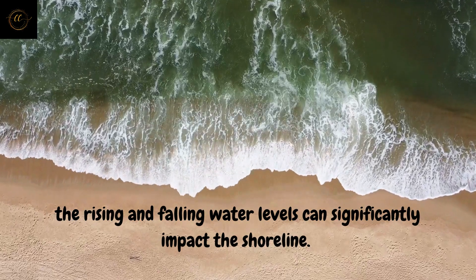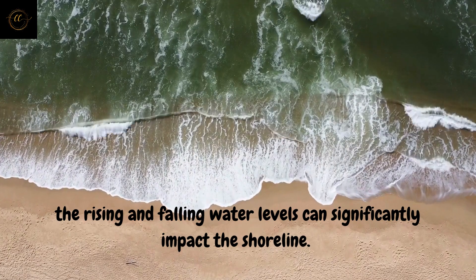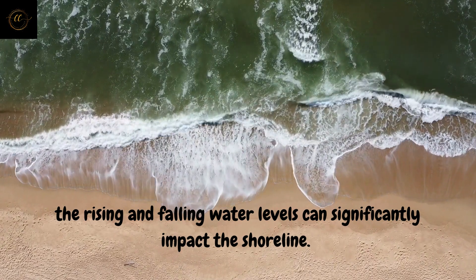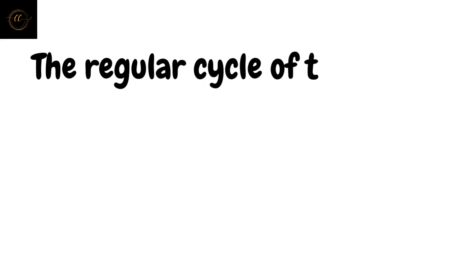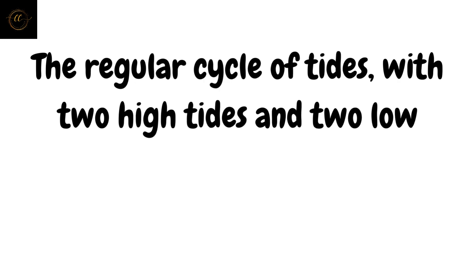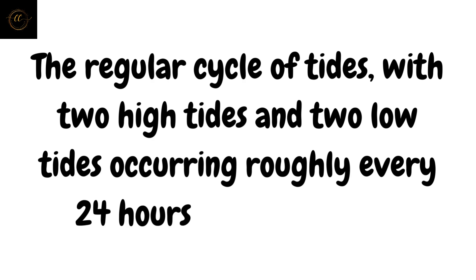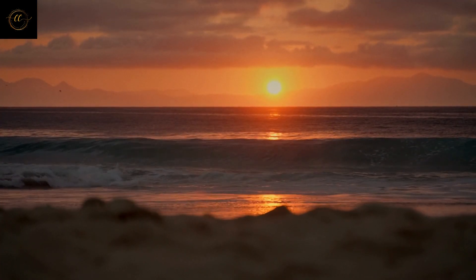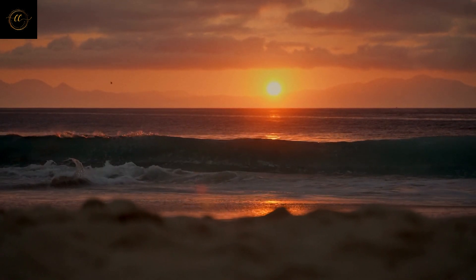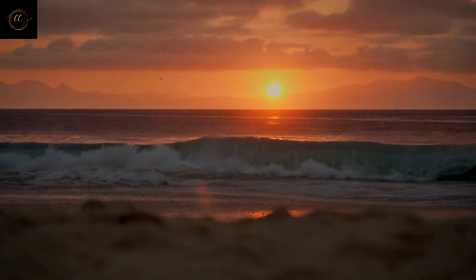Tides are more noticeable in coastal areas and beaches because the rising and falling water levels can significantly impact the shoreline. The regular cycle of tides, with two high tides and two low tides occurring roughly every 24 hours and 50 minutes, creates the rhythmic movement of the water, shaping the coastal landscape and influencing marine life.